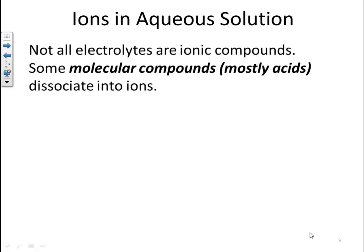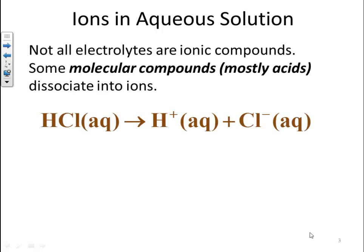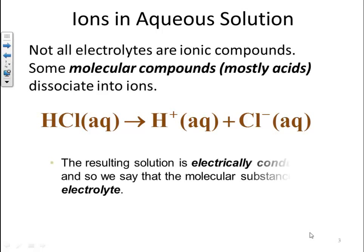Not all electrolytes are ionic compounds. Some molecular compounds, mostly your acids, dissociate into ions. For example, hydrochloric acid breaks up into H⁺ and Cl⁻. The resulting solution is electrically conducting, and so we say that the molecular substance is an electrolyte.